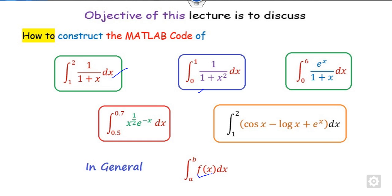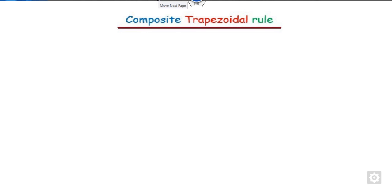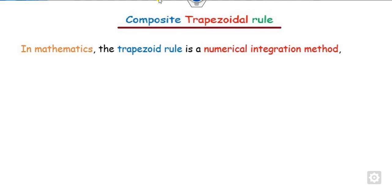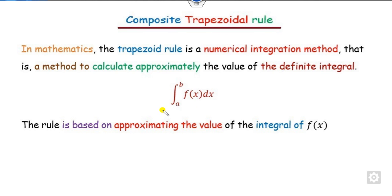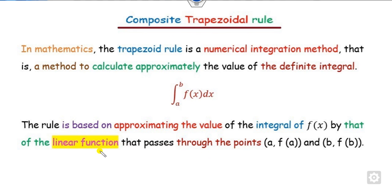In order to define this, we will first see what the composite trapezoidal rule is and what purpose it serves. In mathematics, the trapezoidal rule is a numerical integration method helpful for finding the approximate value of a definite integral from A to B of F of X. This rule approximates F of X by assuming that between two points A and B, the function passes through a linear function.